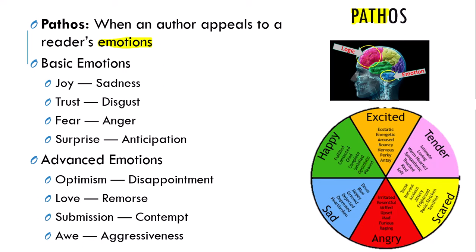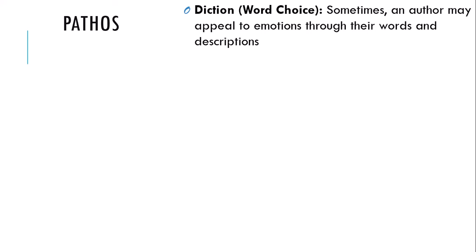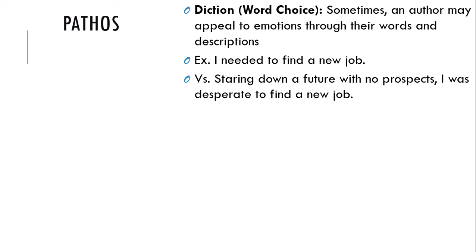Advanced emotions often appealed to include optimism, disappointment, love, contempt, awe, or aggressiveness. How do we discover pathos? Sometimes it's word choice — an author might appeal to emotions through their words and descriptions. For example, 'I needed to find a new job' versus 'Staring down a future with no prospects, I was desperate to find a new job.' The first isn't very emotional, but the second — having no prospects, having desperation — connects with a reader's emotions. Maybe they're worried about their future, anxious, or depressed.